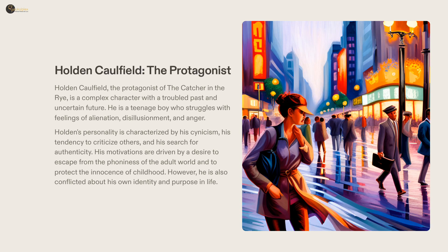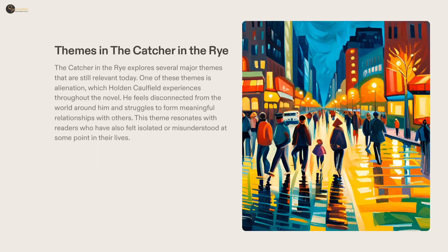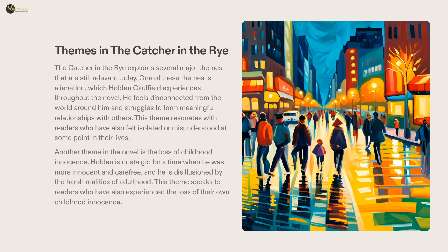While his motivations are understandable, Holden is also trying to identify his purpose in life and his place in the world. The Catcher in the Rye follows Holden Caulfield's journey as he attempts to understand the world and himself. Beyond its surface storyline, the novel grapples with deeper issues of alienation, loss of innocence, and the difficulty of forming meaningful relationships. These ideas remain applicable to readers who have found themselves alone or misunderstood at some point in their lives.